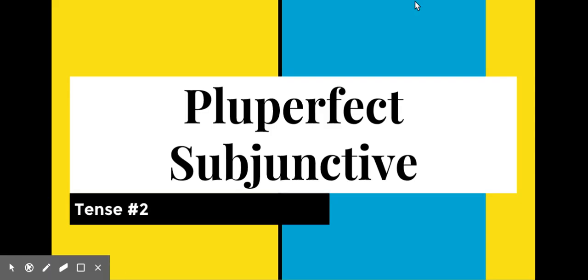Pluperfect subjunctive is the second subjunctive tense that we are going to learn. It has something in common with the imperfect subjunctive, and so it becomes the second easiest tense to learn in the subjunctive mood.